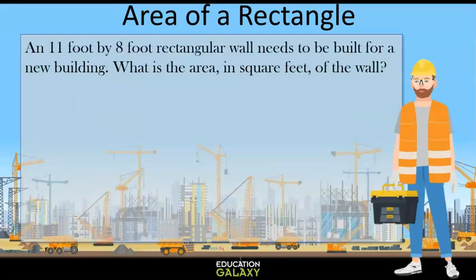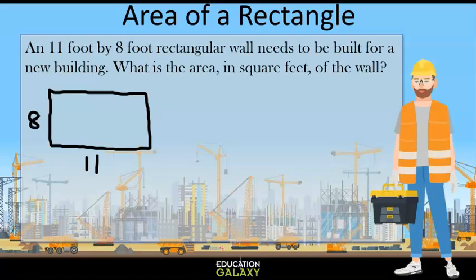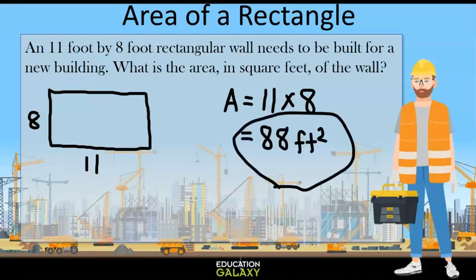Let's try this problem. An 11 foot by 8 foot rectangular wall needs to be built for a new building. What is the area in square feet of the wall? The first thing I like to do when I have a problem is to draw a picture or a diagram. It helps me visualize it. So let's make a rectangle and label it with a length of 11 and width of 8. The area would be 11 times 8 which is 88. So our answer is 88 square feet.